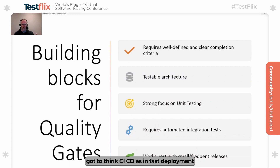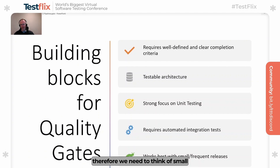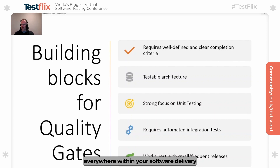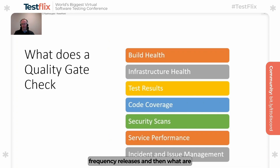We've got to think of CI/CD as fast deployment and fast integration. Therefore, we need to think of small, frequent releases and not big release cycles. So you might not use quality gates everywhere within your software delivery process, but focus more on your small, frequent releases.